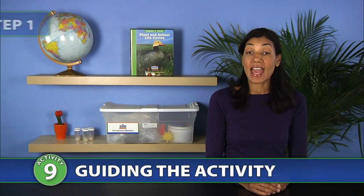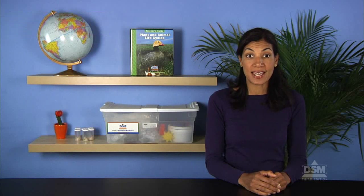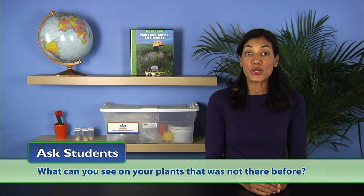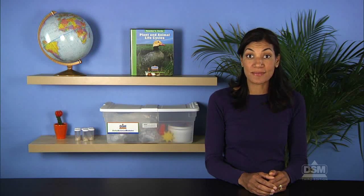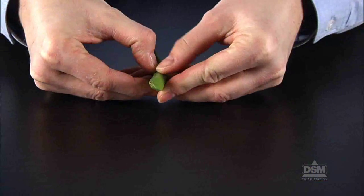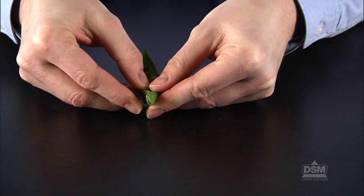To begin the activity, have students retrieve their pea plants and ask, what can you see on your plant that was not there before? Students should notice pea pods on their plants. Distribute to each team of two a fresh pea pod and demonstrate how to open the pod to observe the peas.